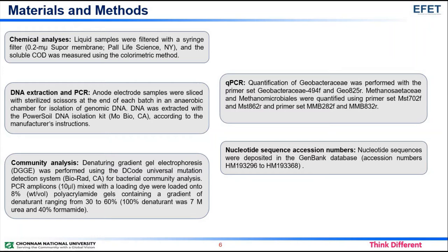Chemical analyses: Liquid samples were filtered with a syringe filter and the soluble chemical oxygen demand was measured using the colorimetric method. DNA extraction and PCR: Anode electrode samples were sliced with sterilized scissors at the end of each batch in an anaerobic chamber for isolation of genomic DNA. DNA was extracted with the PowerSoil DNA isolation kit according to the manufacturer's instructions.